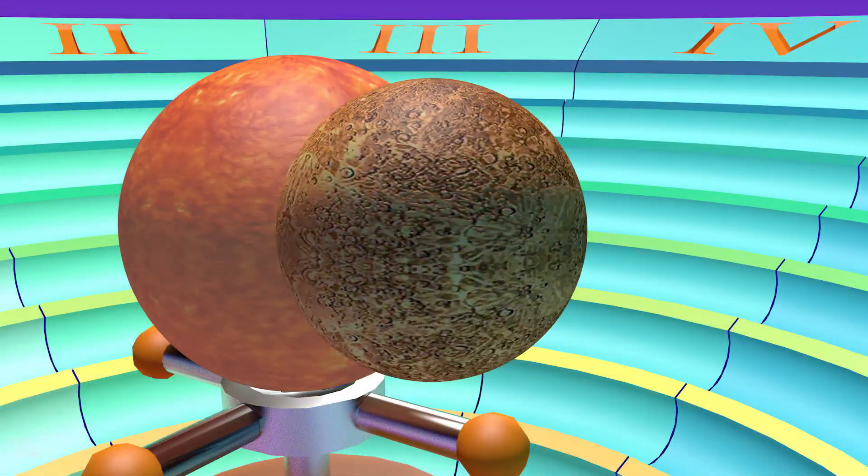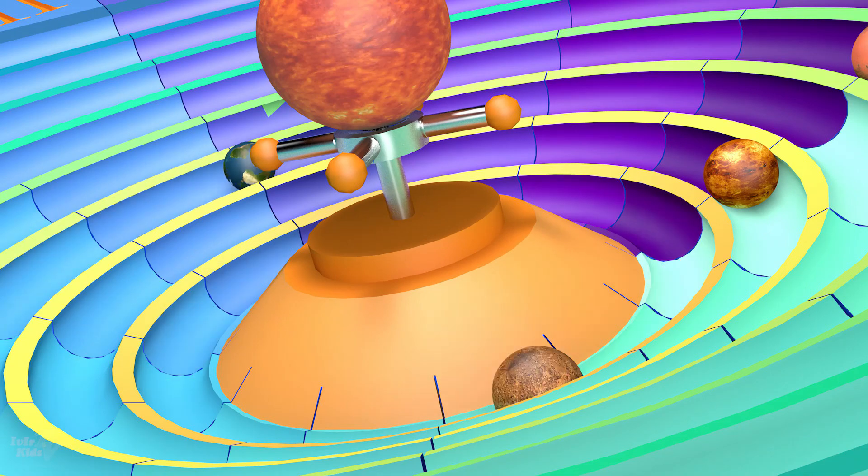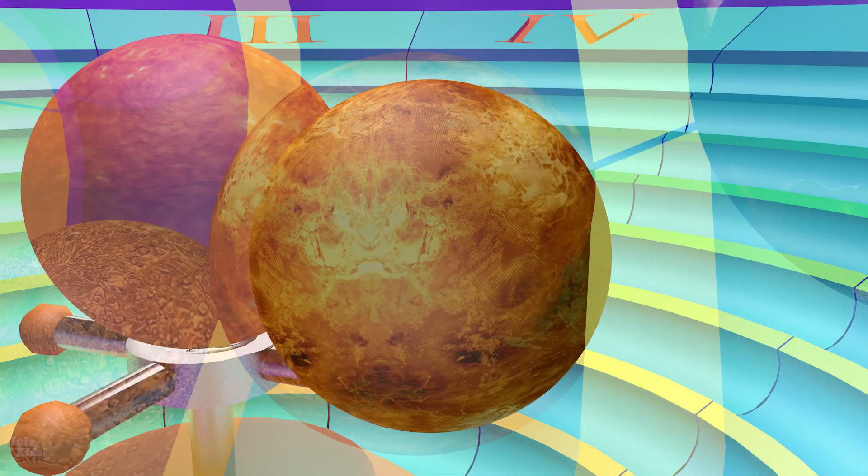The first planet in the solar system, Mercury, is closest to our sun. Mercury makes one revolution around the sun in 88 days. The next planet on the list is Venus.